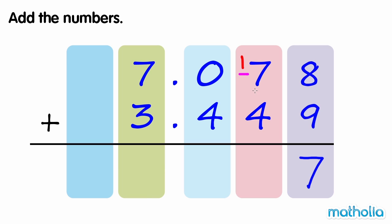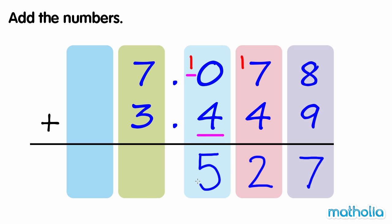1 hundredth plus 7 hundredths plus 4 hundredths equals 12 hundredths. We can regroup 12 hundredths as 2 hundredths and 1 tenth. 1 tenth plus 4 tenths equals 5 tenths. Write the decimal point. 7 ones plus 3 ones equals 10 ones. 7.078 plus 3.449 equals 10.527.